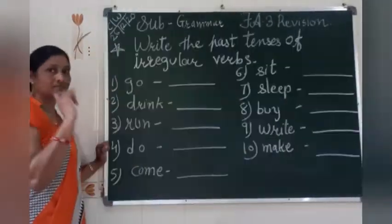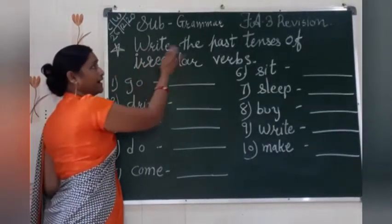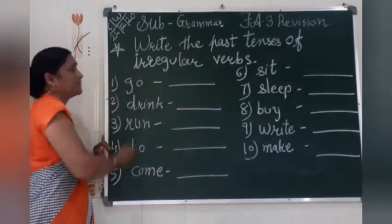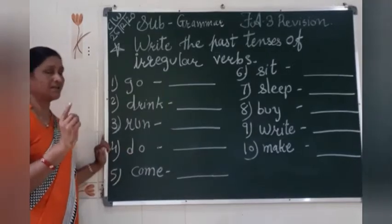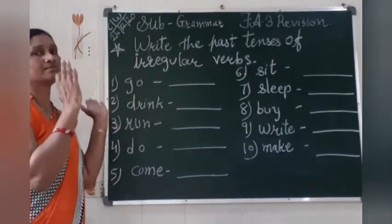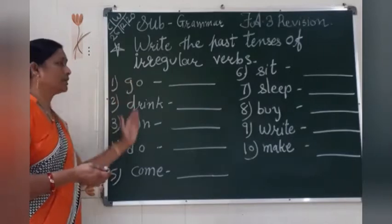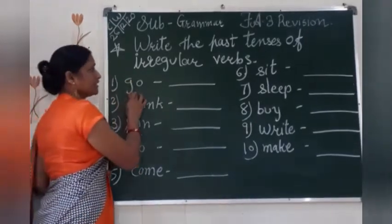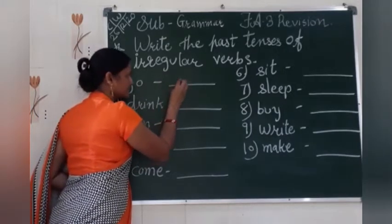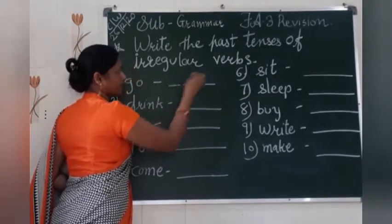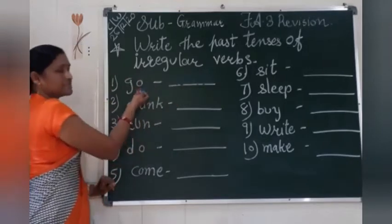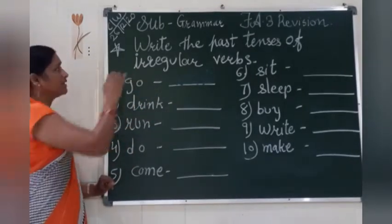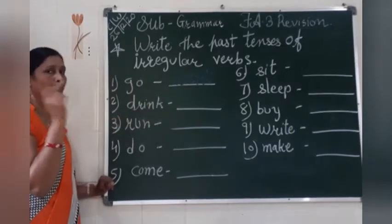Now the next exercise. So children, the next exercise is: Write the past tense of irregular verbs. Yahan par irregular verbs diye hai. Irregular verb ko jab hum past tense form mein likhte hai toh apni spellings ko change kar dete hai. Clear? So first one: 'go' — in past tense form we write 'went', W-E-N-T. Spelling completely changed in past tense form for irregular verbs. Clear?